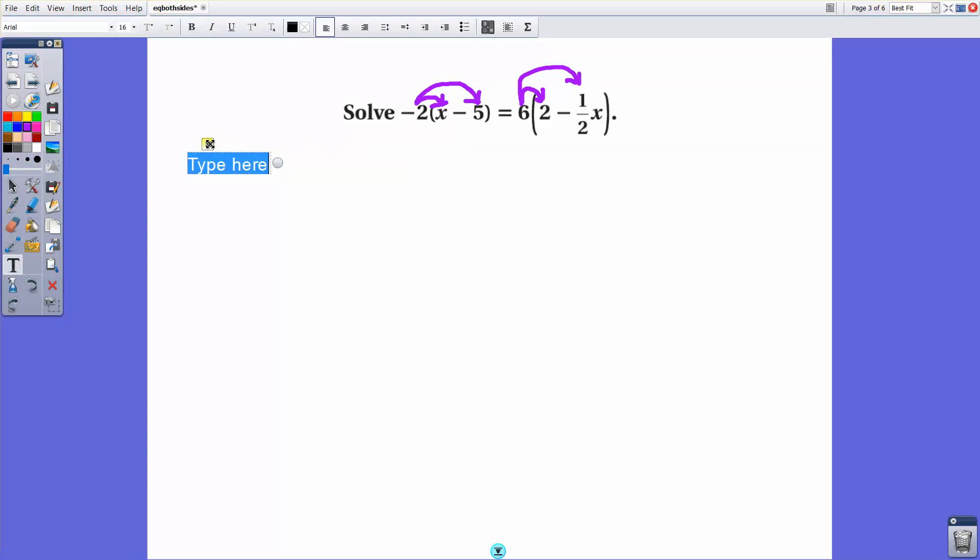So let's go through each of those steps. Negative 2 times x is negative 2x. Negative 2 times negative 5 is positive 10. Equals 6 times 2 is 12. And then 6 times negative half x is negative 3x. So we'll write minus 3x there. So the distribution is done.